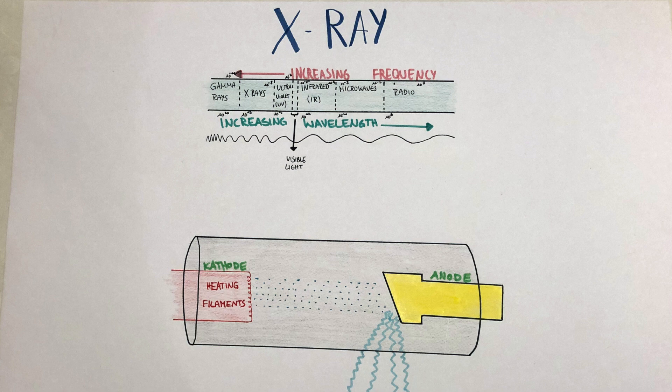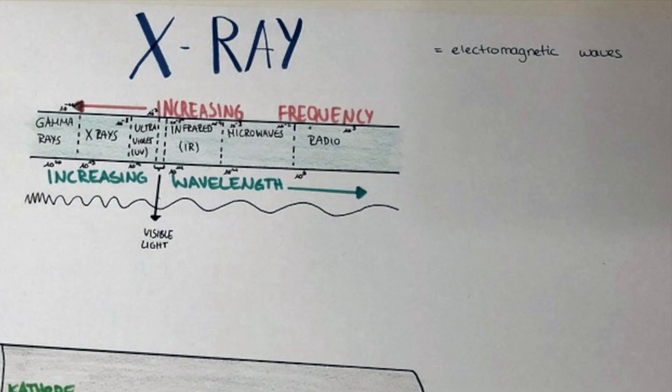X-rays are electromagnetic waves. Here we can see a representation of the electromagnetic wave spectrum, and we can see that their wavelengths are shorter than UV light but longer than gamma waves. Their energy level, however, is higher than UV light but lower than gamma rays. So to summarize, x-rays are photons with high energy but short wavelengths.